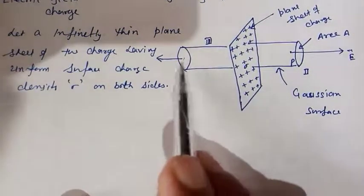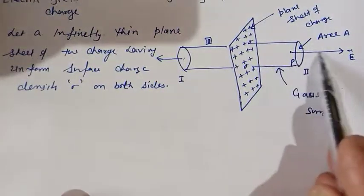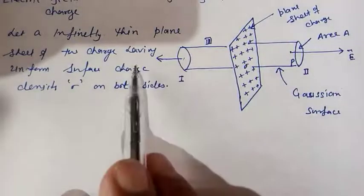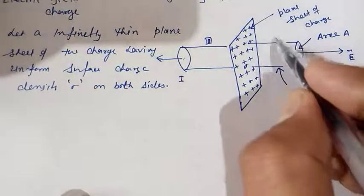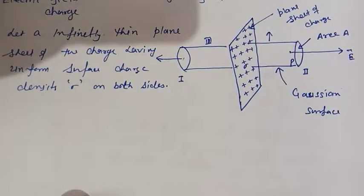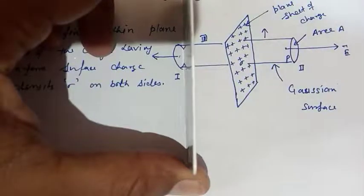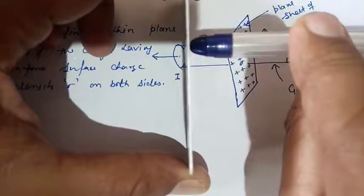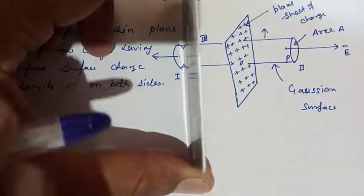The electric field in part one and part two is perpendicular — normal to the circular faces. But in the case of the curved part, the electric field is parallel to the plane sheet of charge. You can see here: the electric field is perpendicular through the circular faces on both sides, going in this direction and also in this direction.